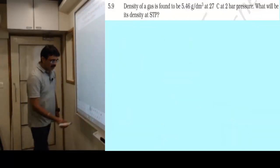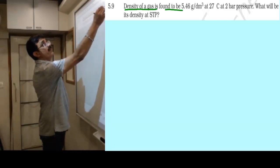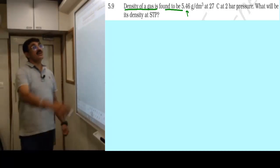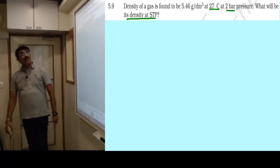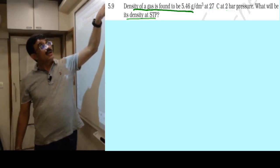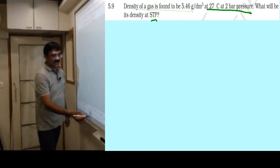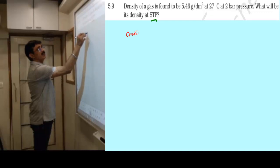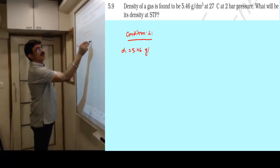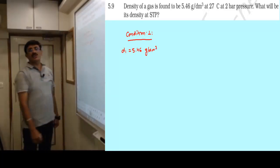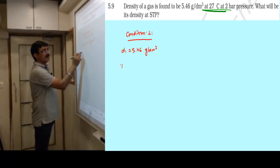We have one more question from your textbook. This question says: the density of a gas is found to be 5.46 gram per decimeter cube at 27 degrees Celsius at 2 bar pressure. What will be its density at STP?